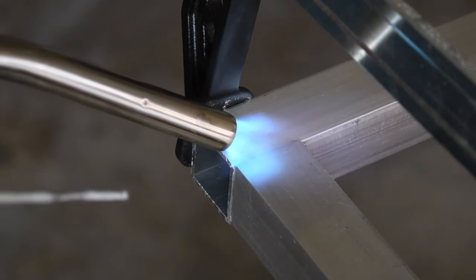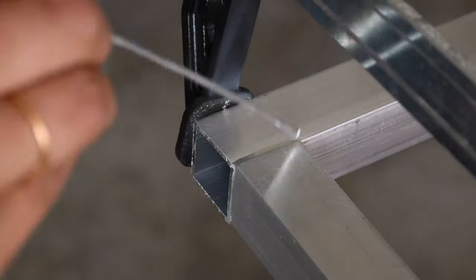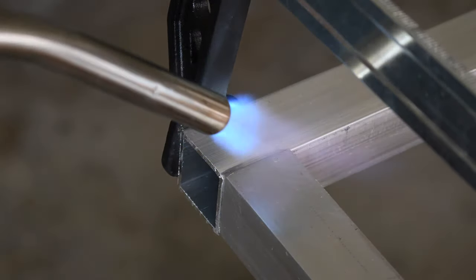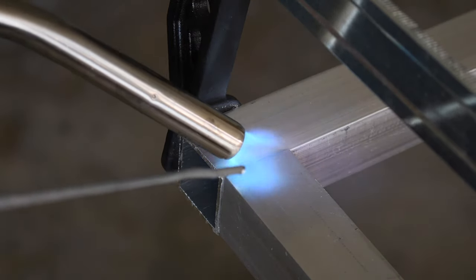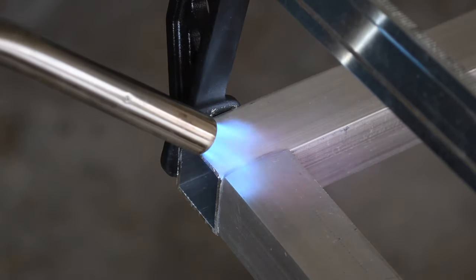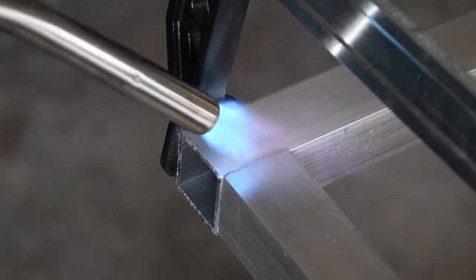Now I started by applying heat to one of the joints. You have to apply heat continuously till the aluminum gets hot enough to melt the brazing rod on contact. For strong joints, it is extremely important that the aluminum is melting the brazing rod and not the heat from the torch.